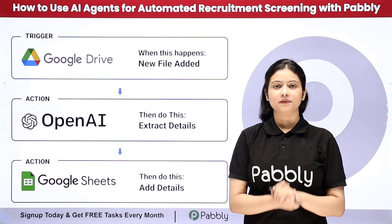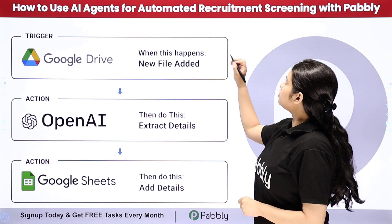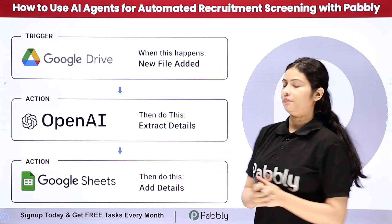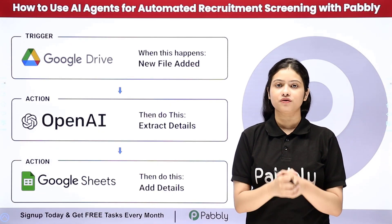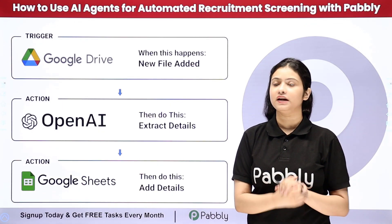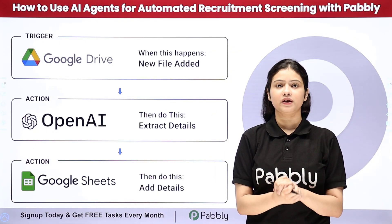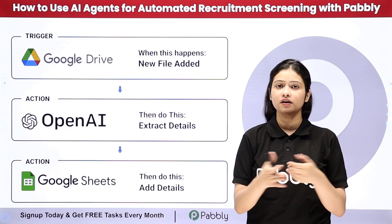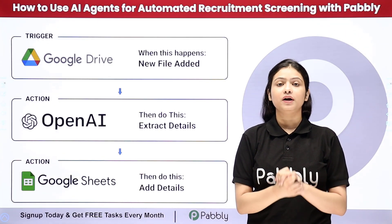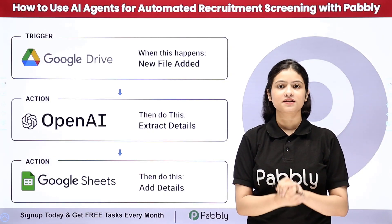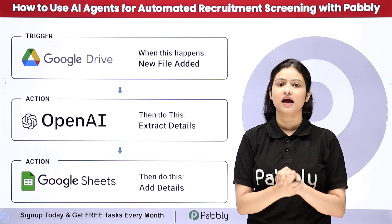Hello everyone, welcome back to Pabbly. In this video we are going to learn how to use AI agents to automate recruitment screening with Pabbly. I am an HR professional receiving multiple resumes on a regular basis that are uploaded in PDF format in my Google Drive. I want to extract details from the resume and on the basis of our company's criteria, I need to select or reject it. Doing it manually is time consuming, so I have decided to automate it with the help of OpenAI and Pabbly Connect.